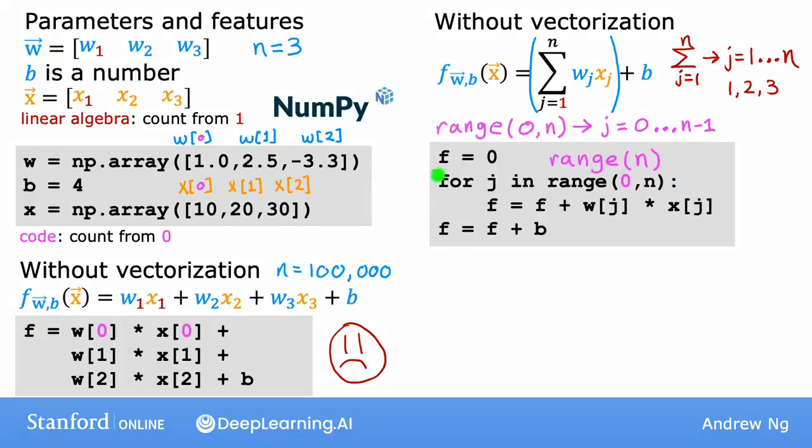While this implementation is a bit better than the first one, it still doesn't use vectorization and isn't that efficient. Now let's look at how you can do this using vectorization.